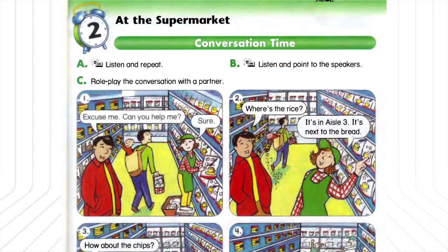B. Listen and point to the speakers. Excuse me, can you help me? Sure. Where's the rice? It's in aisle 3. It's next to the bread. How about the chips? I don't know. Let's look. Great. Thanks.